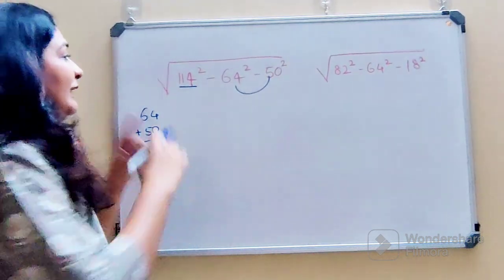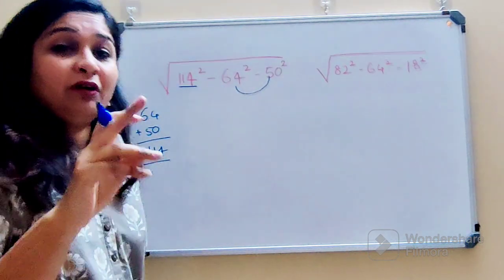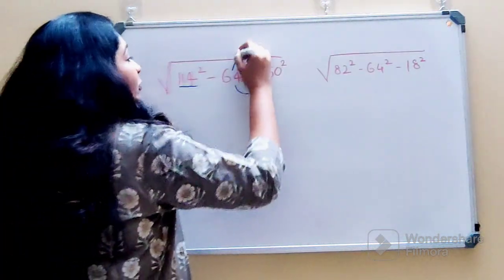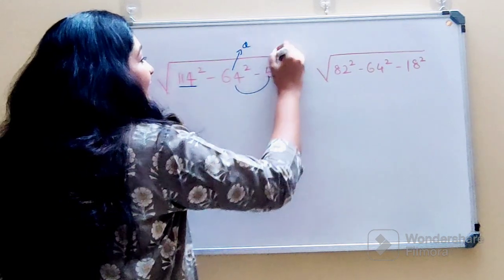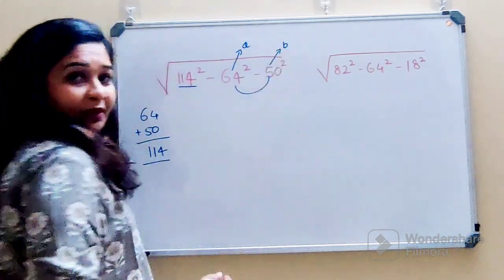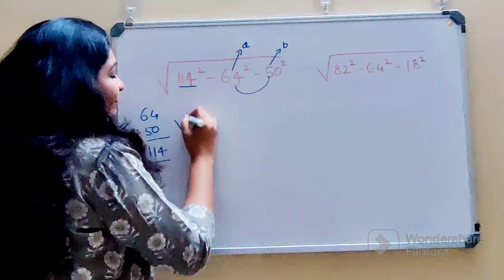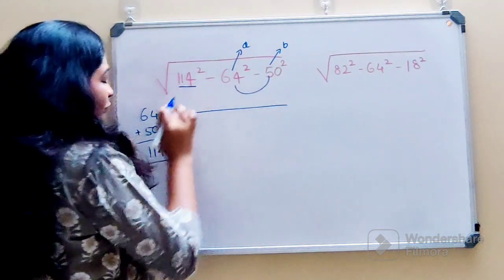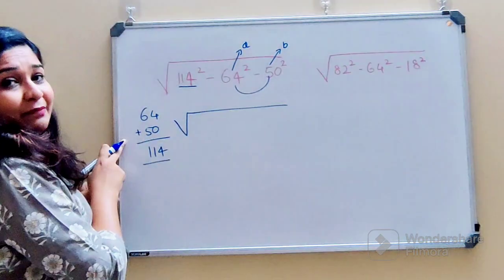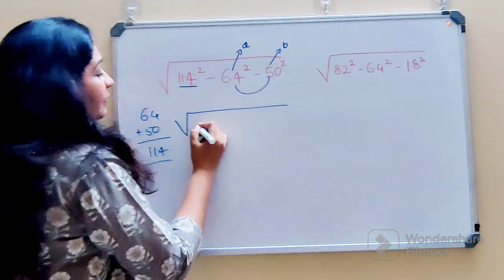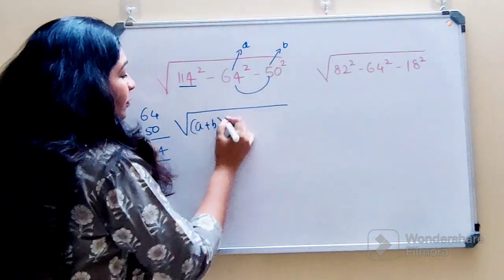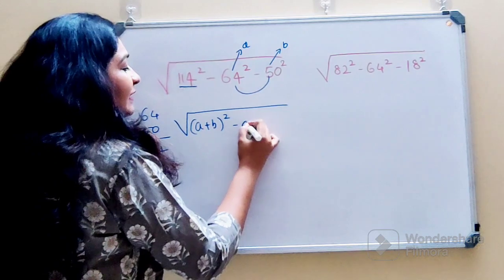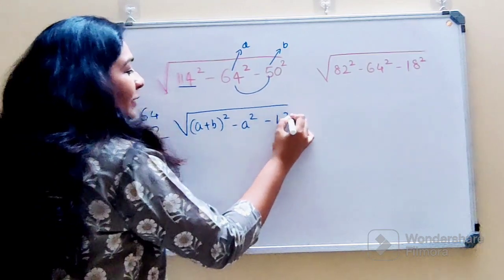Now in order to solve this, we will take help of algebra. Here I am going to take this as A and this as B. So I can write 114 as A plus B the whole square. So it is (A+B)² minus A² minus B².